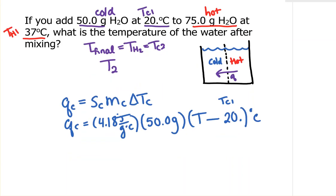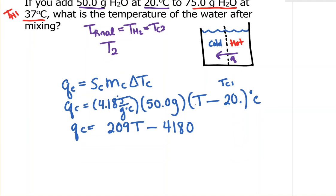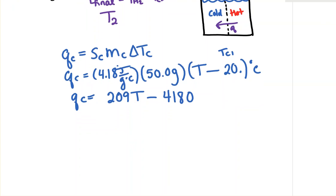We'll talk about sig figs later - this gets complicated with the algebra. On this step, I'm multiplying all of this by T, then subtracting all of that times 20. So q_c equals 209T minus 4180. Now let's do the same thing for the hot water.